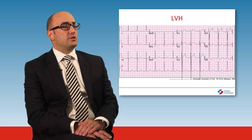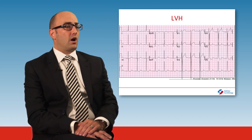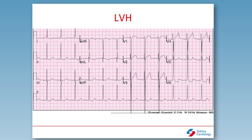This is an ECG of left ventricular hypertrophy, although the patient is in sinus rhythm. You can see the deep S-wave in V1 and the tall R-wave in V6. There's also a tall R-wave in AVL. This is classic for left ventricular hypertrophy.